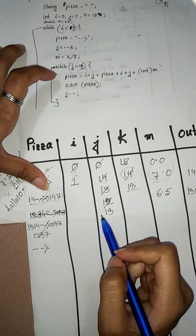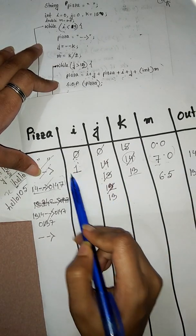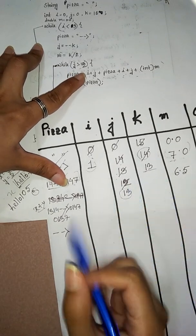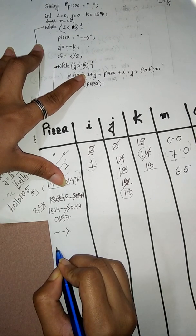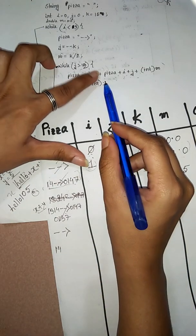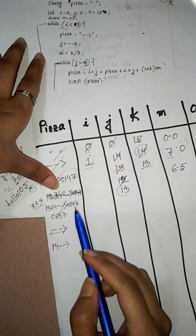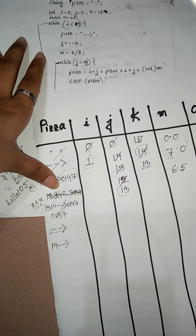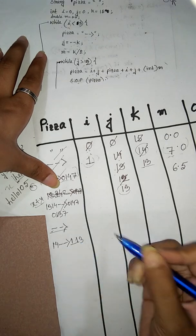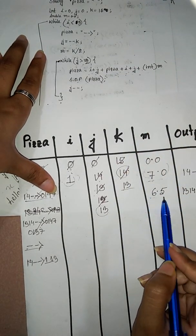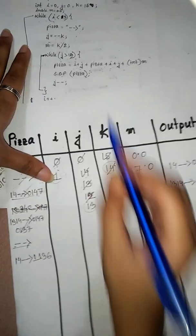j is 13 — 13 is greater than 12, so this condition is true and we continue. Pizza equals to — its value is i plus j, i plus j means 1 plus 13 equal to 14. When it's not a string, that's when mathematical operation happens. So 1 plus 13 equal to 14 — then pizza's value is 14. Now if you have a string then you have a mathematical operation so i plus j. Integer m — this value is 6.5 and then we convert to integer, so m equals to 6.